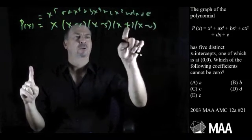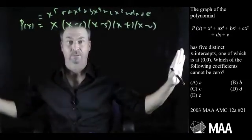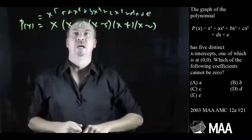We're told it has five distinct roots. Okay, so u, t, s, r, and zero are all different. Okay, they're definitely different. Alright, great.